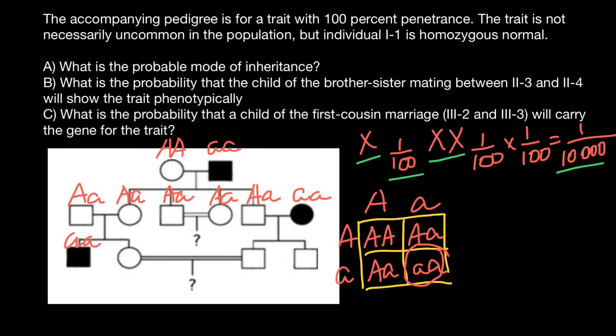Now let's answer the last question: what is the probability that a child of the first cousin marriage between 3-2 and 3-3 will carry the gene of the trait? Important here is 'will carry' — not would be affected, but would carry the recessive allele. It's stated here as 'gene,' but the correct term would be 'allele.' In order for this child to be a carrier or heterozygous, they have to have one dominant allele and one recessive allele. This recessive allele can come from the mother's side or the father's side.